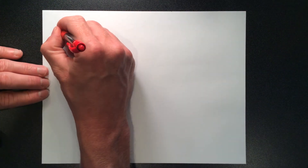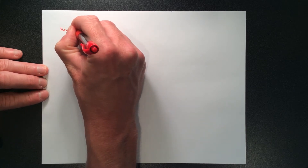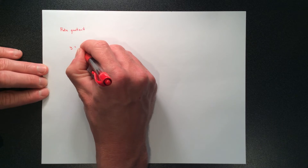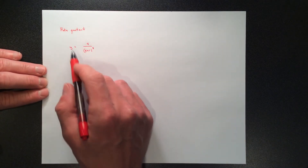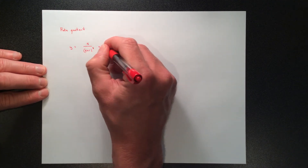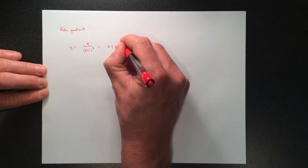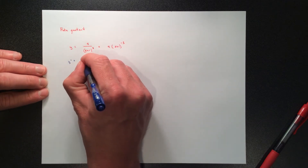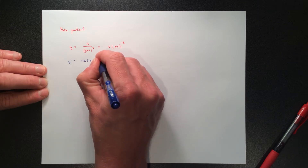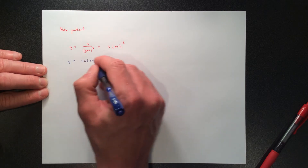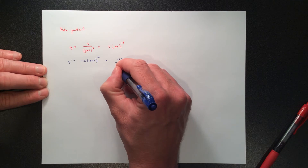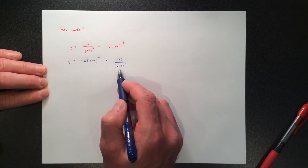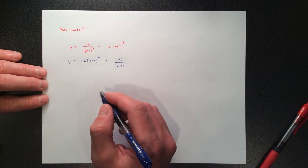I want to talk about what I call the fake quotient rule. If you have something like 4 over (x+1) cubed, I really don't think you should treat that as a quotient. Instead, rewrite it as 4 times (x+1) to the negative 3 and apply the power rule. Bring the power down to get negative 12, decrease the power by 1 to get negative 4, times the derivative of the inside — but the derivative of x+1 is just 1. You can simplify to negative 12 over (x+1) to the fourth. If there's just a constant in the numerator, skip the quotient rule.